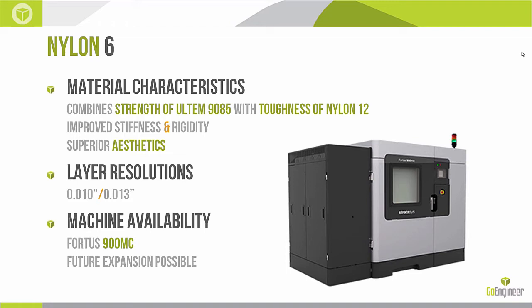The aesthetics are actually better than Nylon 12 as well — the aesthetics of Nylon 12 were one of its disadvantages, as customers expected parts to look a bit better and they didn't look quite as smooth as ABS or ASA parts. We were able to get better aesthetics in Nylon 6, though we lost the 7 thou slice height — Nylon 6 is 10 and 13 thousandths only. We're also more limited on machines: this is a Fortus 900 MC material only right now, though Stratasys has said that will be re-evaluated.